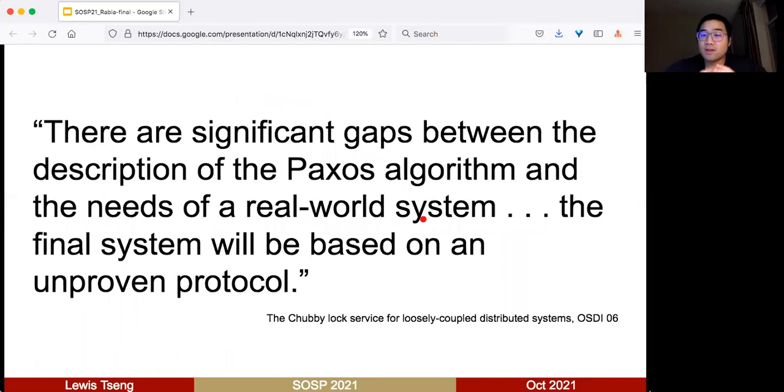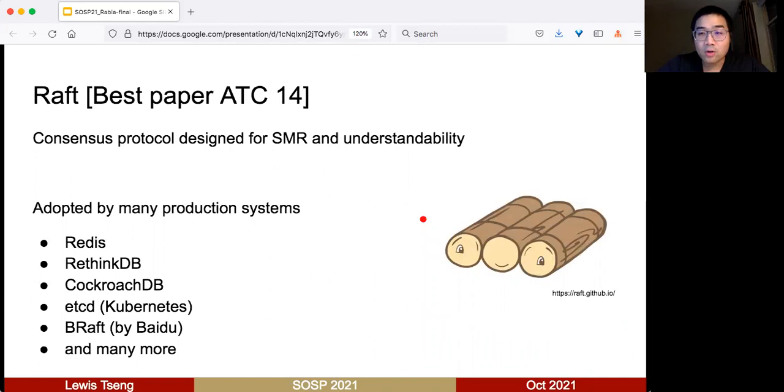But even though Paxos is very beautiful and the idea is elegant, it's not easy to develop a production system based on Paxos. From experience with Google Chubby developers, when you develop something, the final result will be based on some unproven protocol because you need customization. This partially inspired Raft, which won best paper at ATC. Raft is a consensus protocol designed with SMR in mind where understandability was the first-class citizen. Because the notion behind Raft is a stronger notion of leadership, it's simpler to understand and was quickly adopted by many production systems.